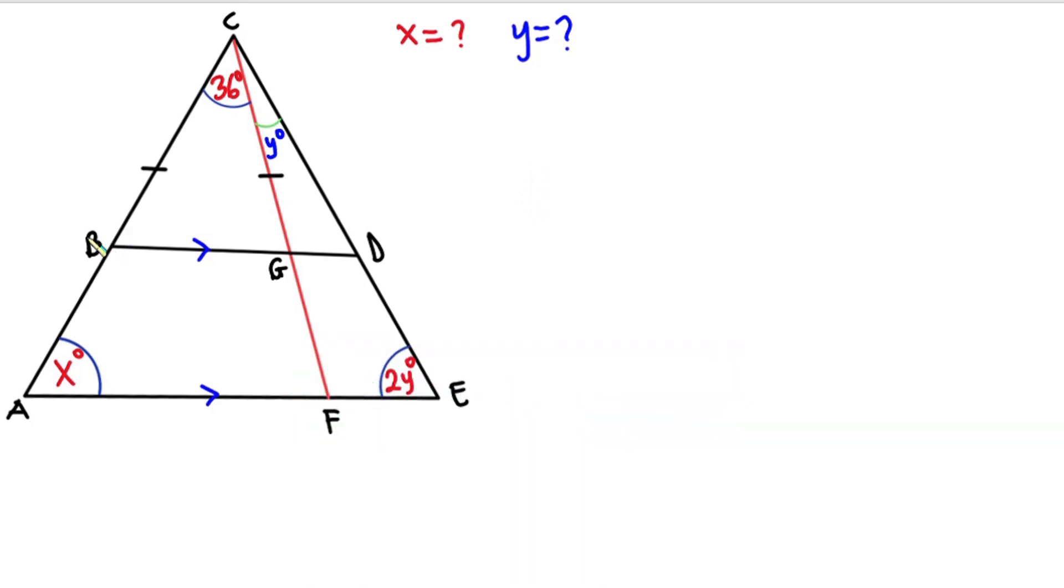The question is saying that triangle BCG is an isosceles triangle, so line BC is the same as line BG. It means that the angle over here is the same as the angle over here.